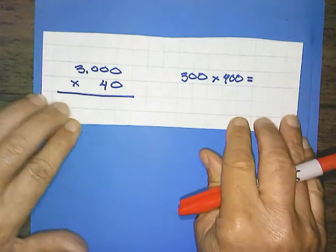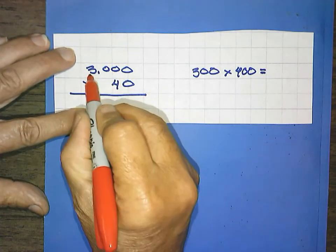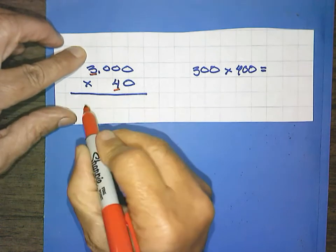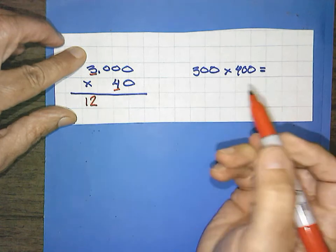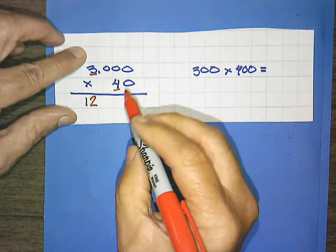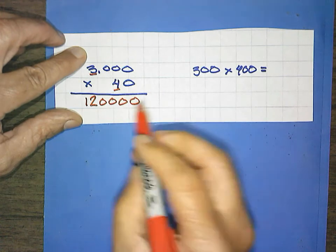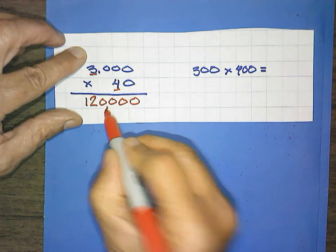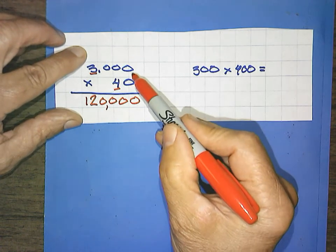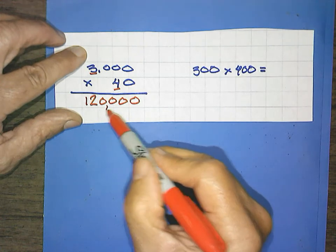Again, pause if you have to, if you just want to practice. Same principle. Take your solids. 3 times 4, 12. Count your zeros. 1, 2, 3, 4. Write your zeros. 1, 2, 3, 4. Don't forget your separator for commas. This would be our ones. This would be our ones period and our thousands. So 3,000 times 40 would equal 120,000.